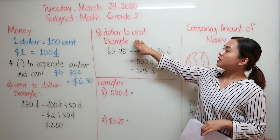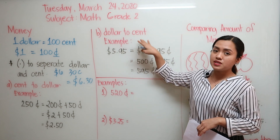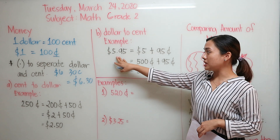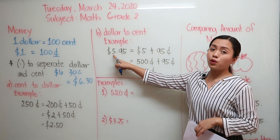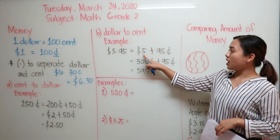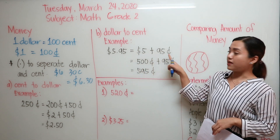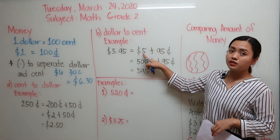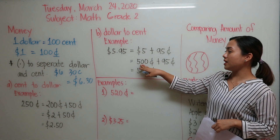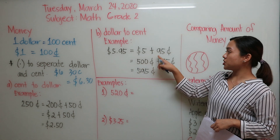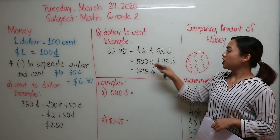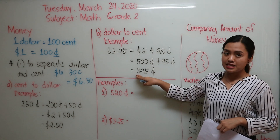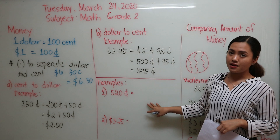Now the opposite: we have converting dollar to cent. So if we have here $5 and 95 cents, then we are going to separate both of these. So $5 plus 95 cents. Now what is the equivalent of $5 if you're going to convert it to cents? It will be 500 cents. And then just copy 95 cents. Add them together, then you will get 595 cents.